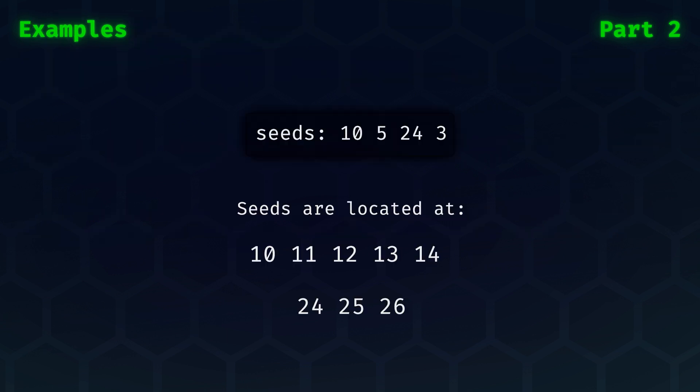A short example is in order, I think. Here we are provided seed values 10, 5, 24, and 3. This then means that we have 5 seeds starting at number 10, and 3 seeds starting at number 24. And that's all there is to it. Now, how can we find the minimum position this time?